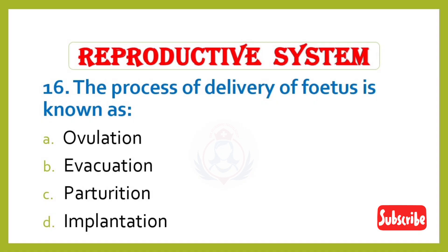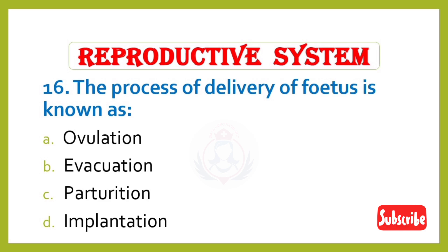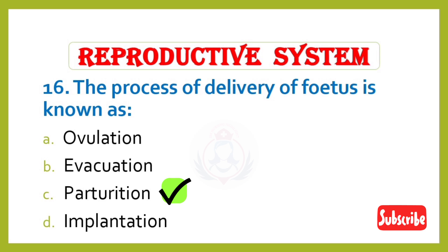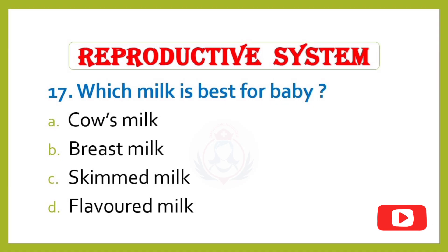Question 16. The process of delivery of the fetus is known as: Option A – Ovulation, Option B – Evacuation, Option C – Parturition, Option D – Implantation. Correct answer is Option C: Parturition, which means childbirth.